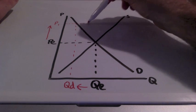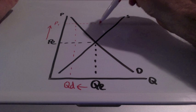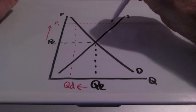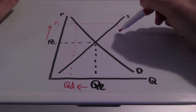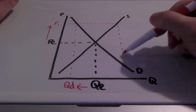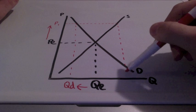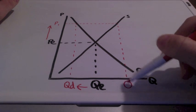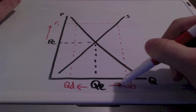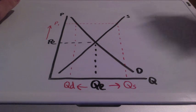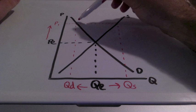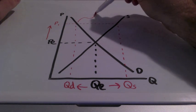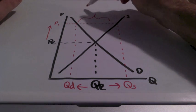But as prices, meaning our costs increase, quantity supplied will also increase. So, this area here, what does this area represent? This area represents a surplus.